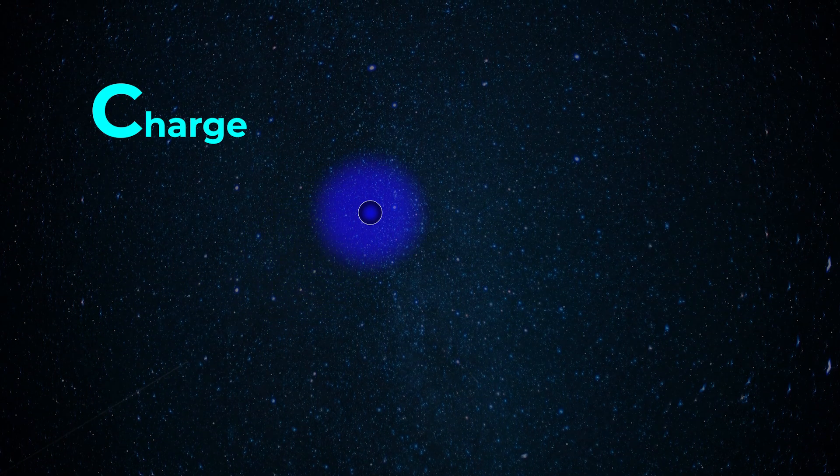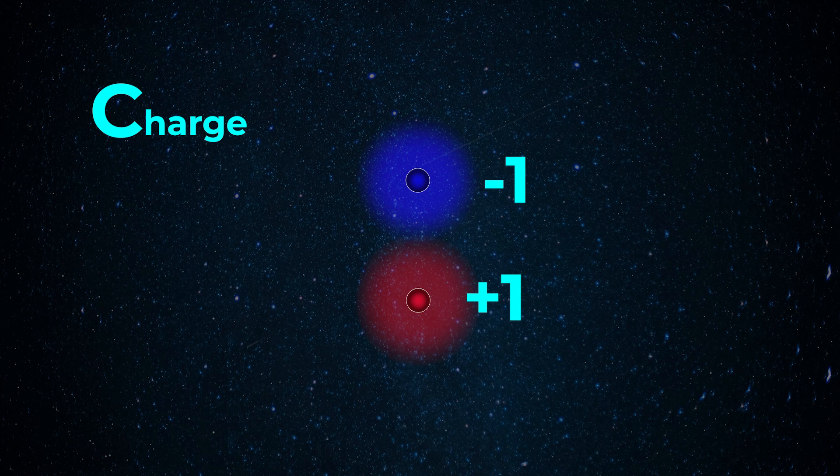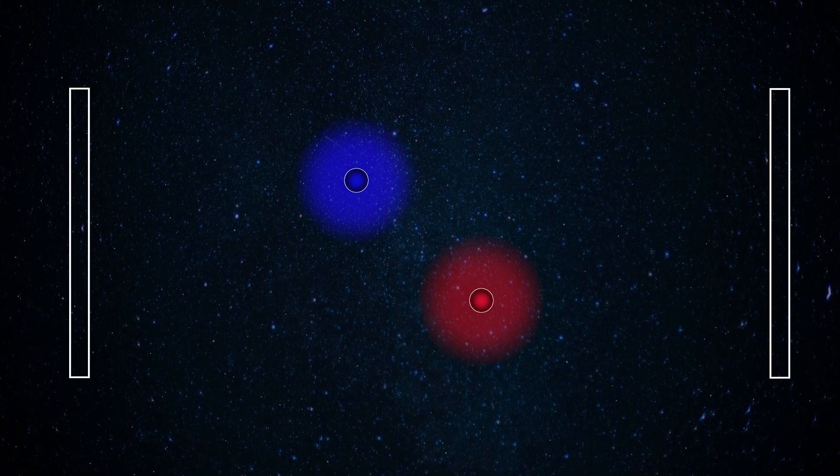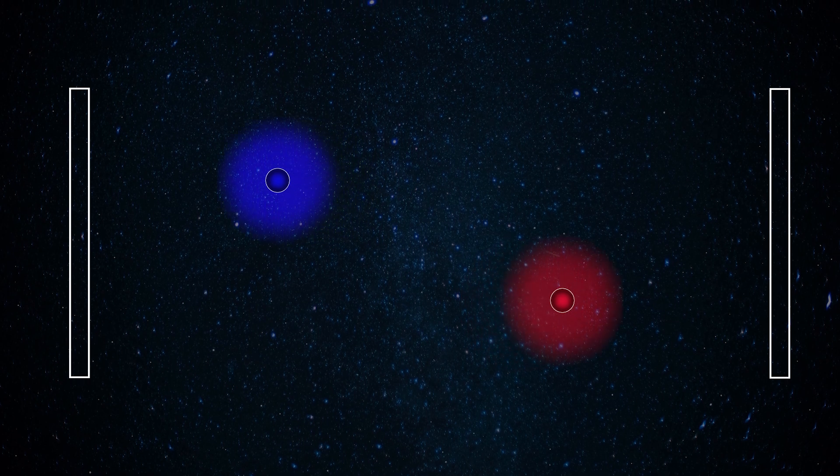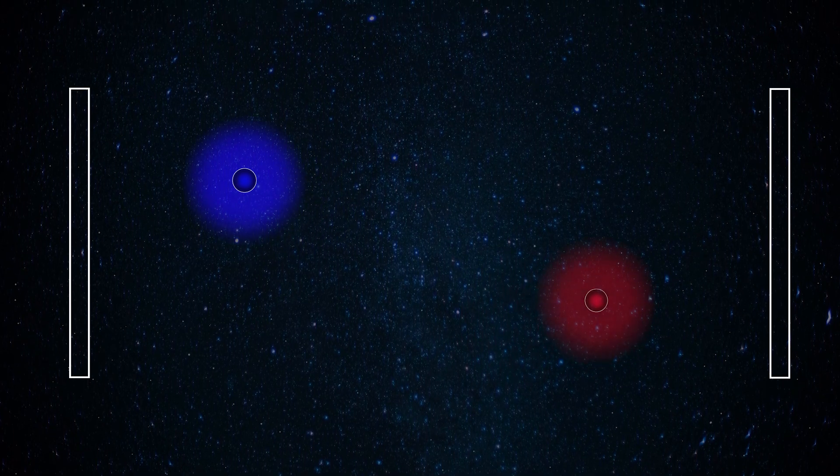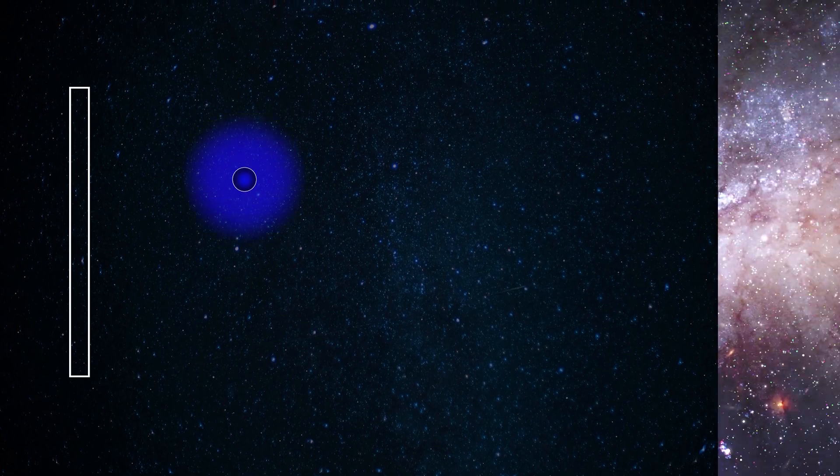And C stands for charge, flipping the charge of something shouldn't make it behave fundamentally differently. Yes, in an electric field different charges should head in different directions, but that's accounted for by the sign of the charge. What it shouldn't do is cause the particles to disappear from existence, which is what's happening here.